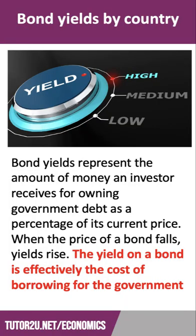A bond yield is effectively the amount of money that an investor who has bought a government-issued bond gets from owning the debt, as a percentage of the current price. So typically once a year — sometimes twice a year — whoever holds a bond will receive interest. You then divide the interest by the market price of the bond, and that gives you effectively a measure of the yield, or the return on a bond.